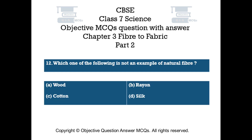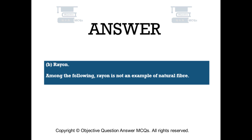Question number 12. Which one of the following is not an example of natural fiber? Option A: Wood. Option B: Rayon. Option C: Cotton. Option D: Silk. The right answer is Option B — Rayon. Among the following, Rayon is not an example of natural fiber.